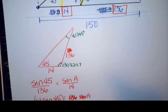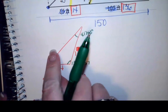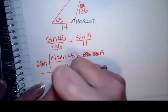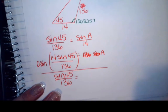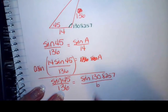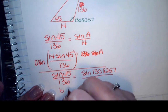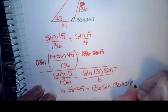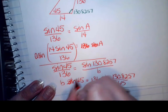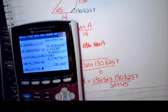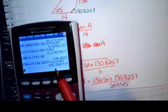Now I can find the missing side length. Going back to my law of sines ratio — sine of 45 over 136 equals sine of 130.8257 over the missing side B. Cross-multiplying: B times sine of 45 equals 136 times sine of 130.8257. Dividing both sides by sine of 45 gives me a side length of 145.5388.